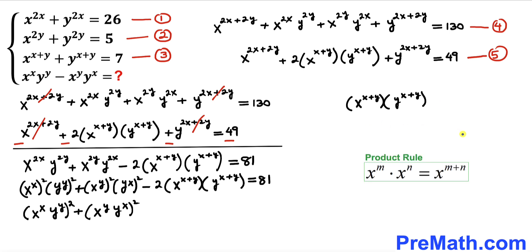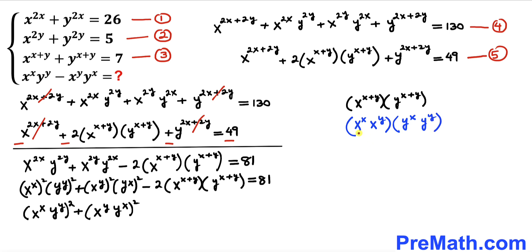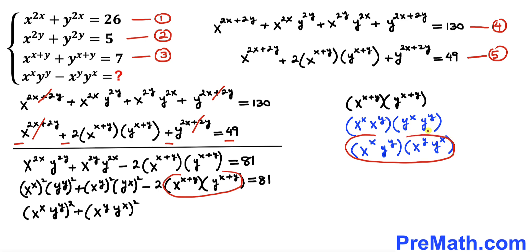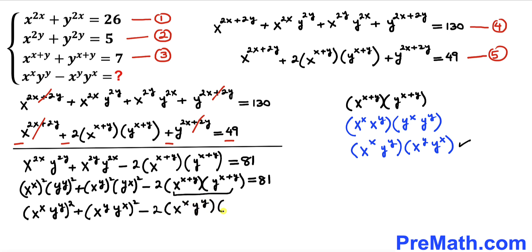Focusing on the middle term and applying the product rule, x^(x+y) = x^x × x^y and y^(x+y) = y^x × y^y. Rearranging, x^(x+y) × y^(x+y) = x^x × y^y × x^y × y^x. So the expression becomes: (x^x × y^y)² + (x^y × y^x)² − 2(x^x × y^y)(x^y × y^x) = 81.